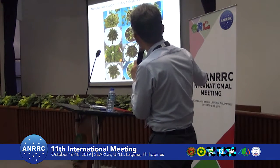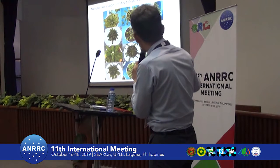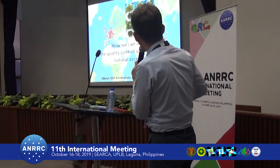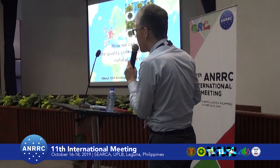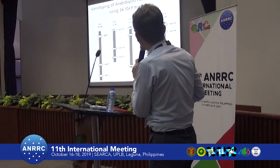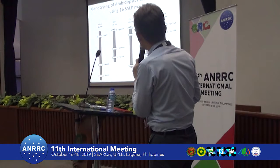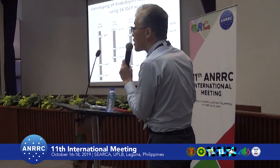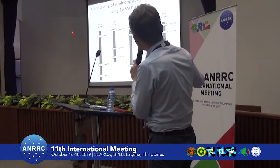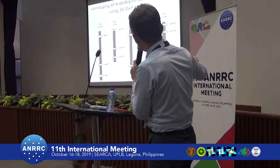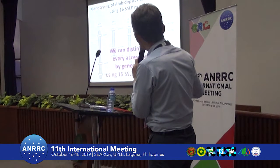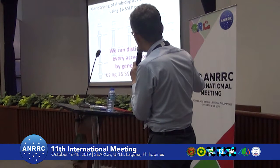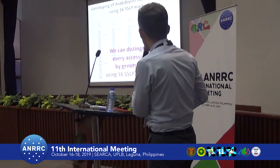Every plant is Arabidopsis. How can we manage the quality control of Arabidopsis natural accessions? This is a very big problem. We try to make a genotyping system for Arabidopsis natural accessions using 16 SSR markers. We design 3 or 4 SSR markers for each chromosome, and finally we can distinguish specifically every accession by genotyping using these 16 SSR markers.